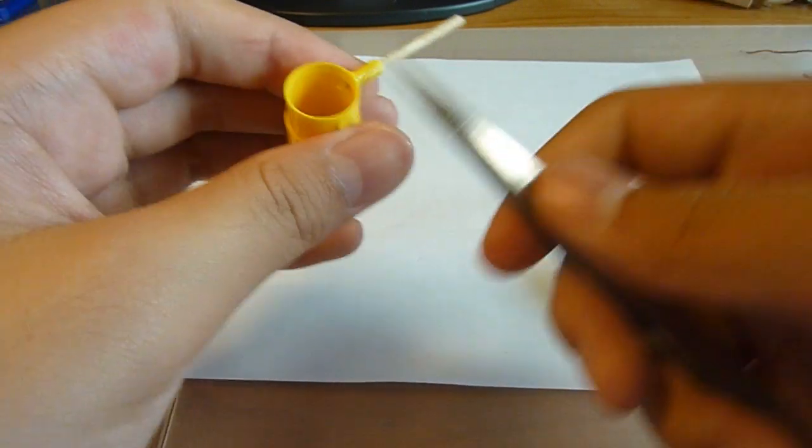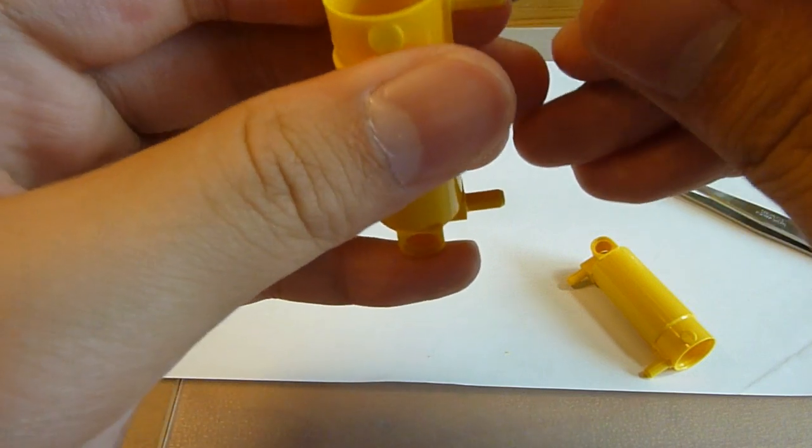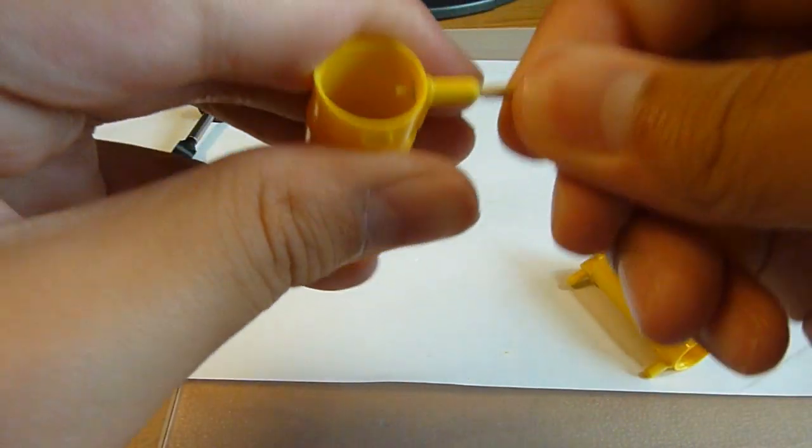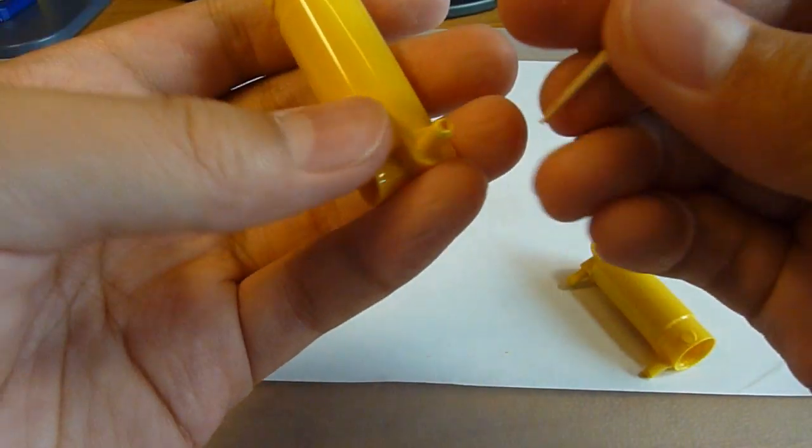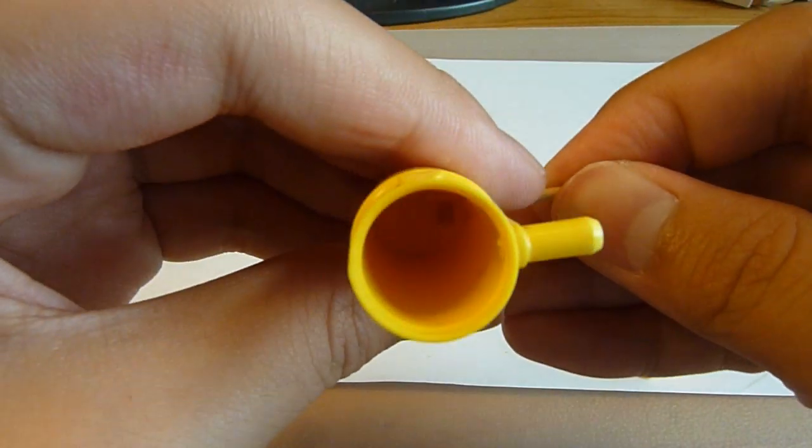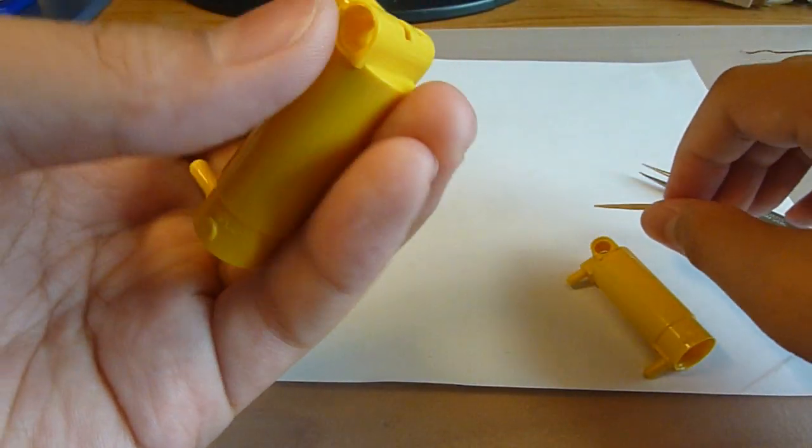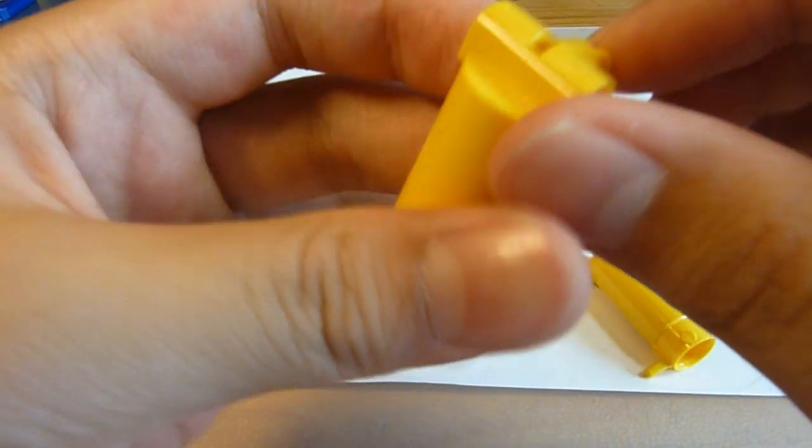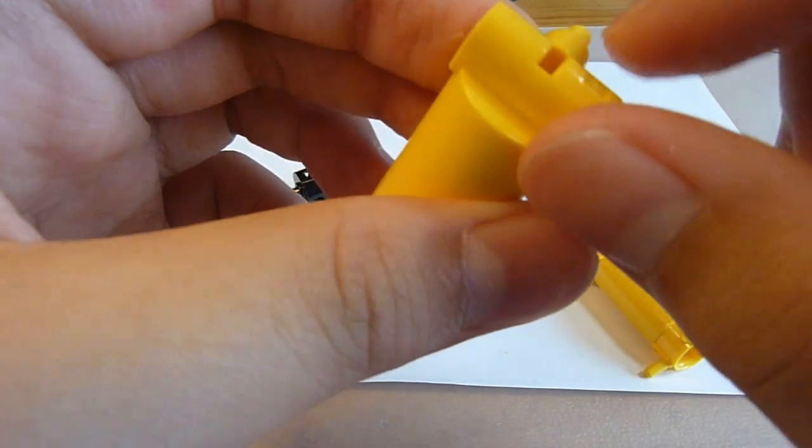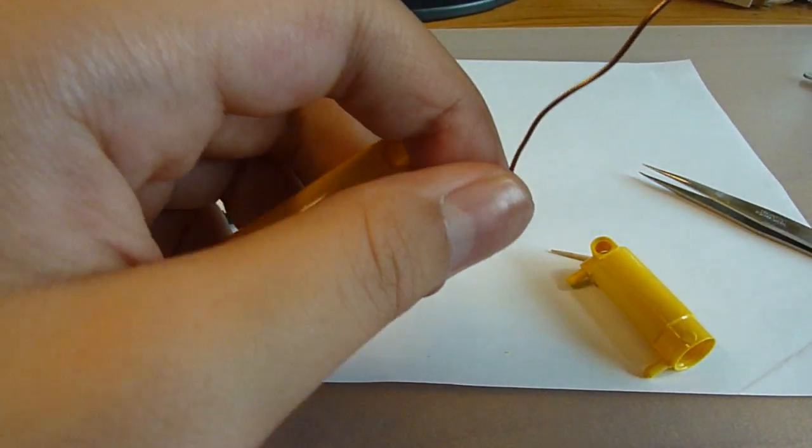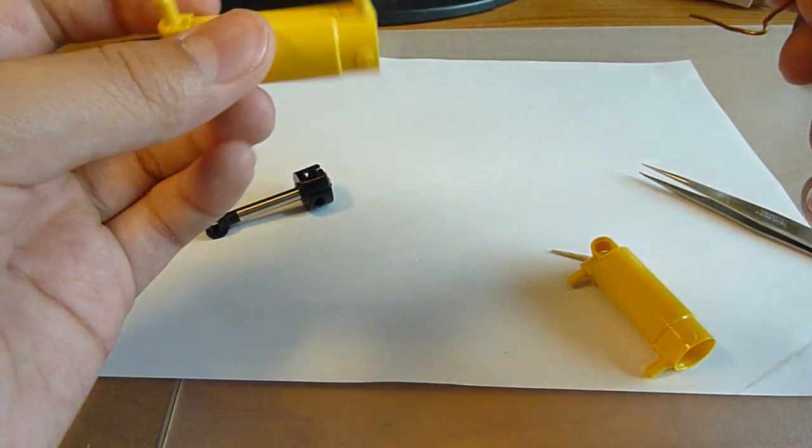And you need to use this to push here. Use this, you can make the hole more bigger. And just out. Here also keep looking it. Remember, don't push too with big power, or you will, the metal pass through it to here. Then you need to buy a new one.